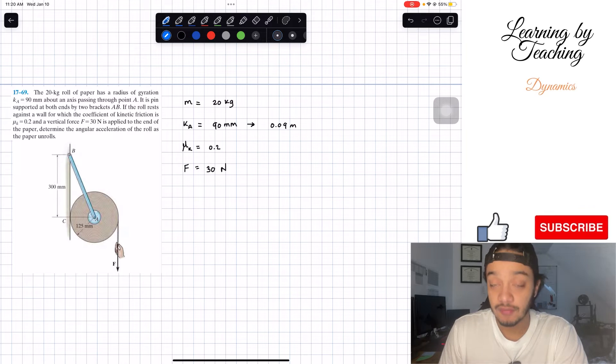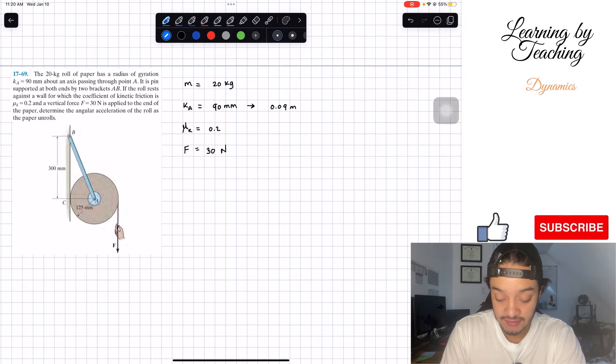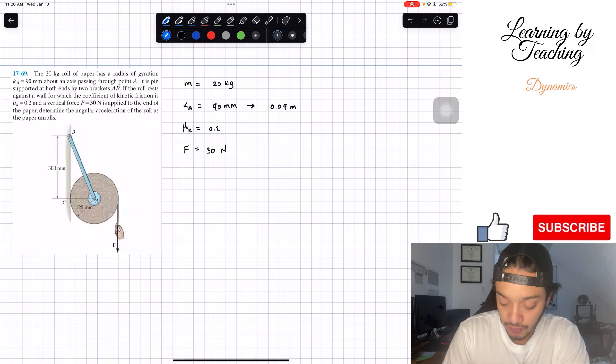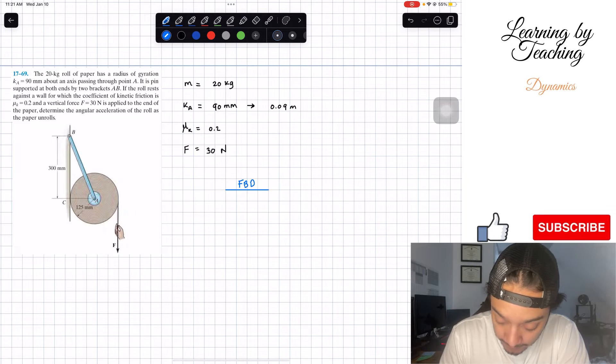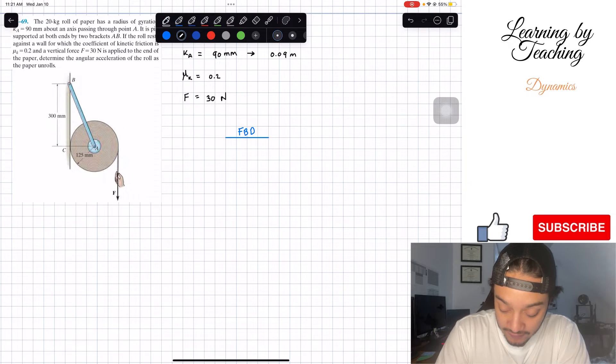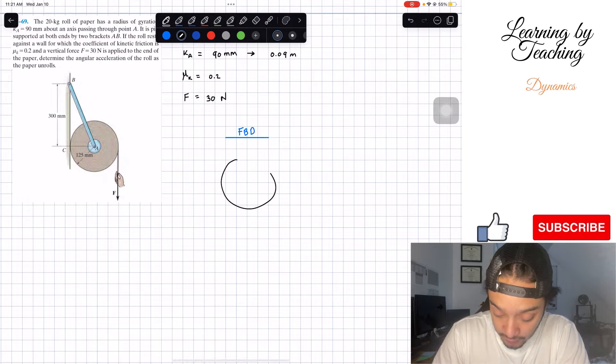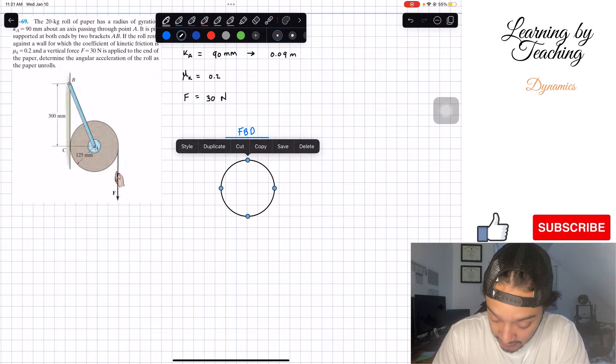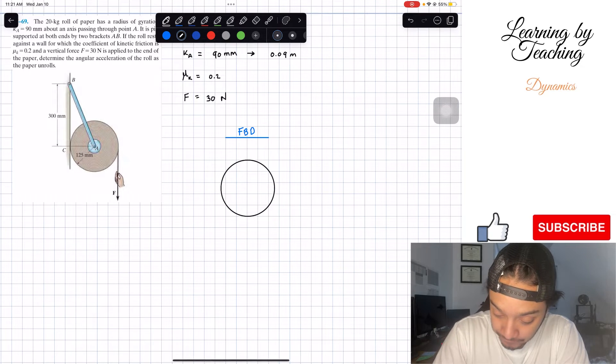Like always, since it's in statics, the next step will be to do a free body diagram. So let's go ahead and do a free body diagram. We have our free body diagram of our roll, something like this with our point A right here in the middle.